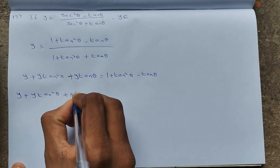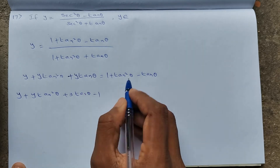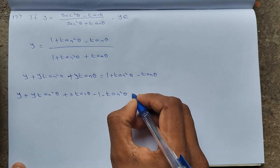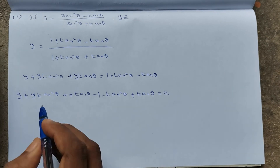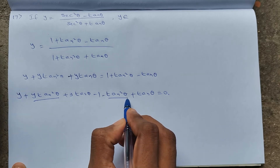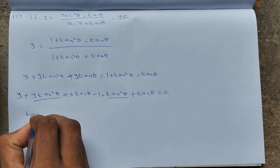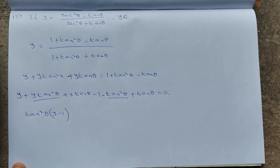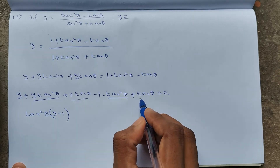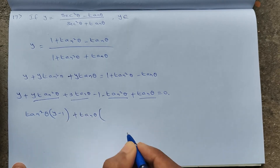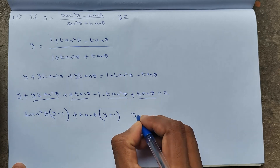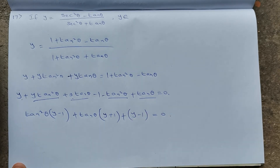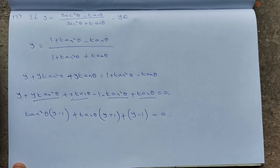Rearranging: y tan²θ + y tanθ + y − 1 − tan²θ + tanθ = 0, which simplifies to tan²θ(y − 1) + tanθ(y + 1) + (y − 1) = 0. This is a quadratic in tanθ.